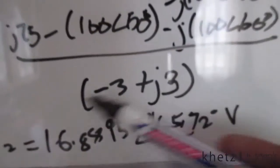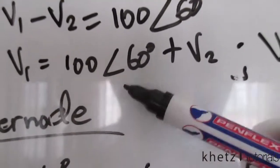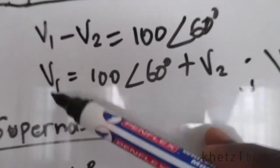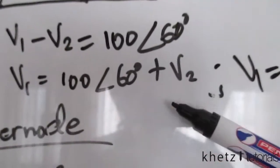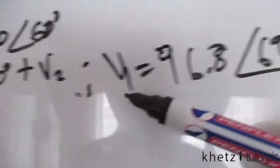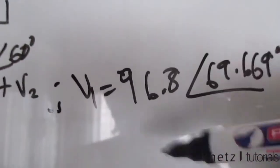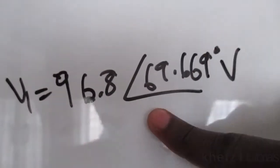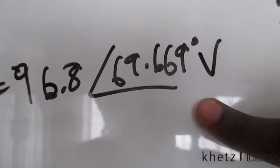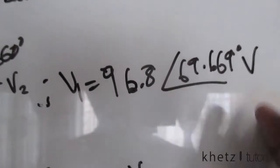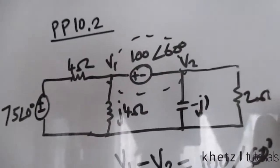Taking this value, we come back to the equation: 100 with an angle of 60 degrees plus V2 equals V1. Substituting our calculated V2 into that equation, we get V1 equal to 96.8 volts with an angle of 69.669 degrees. So those are your two values: V1 and V2.